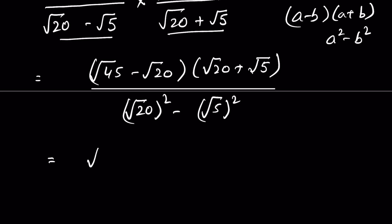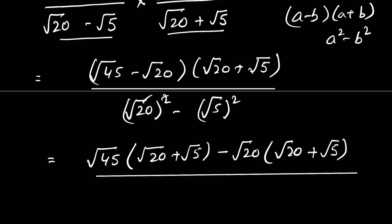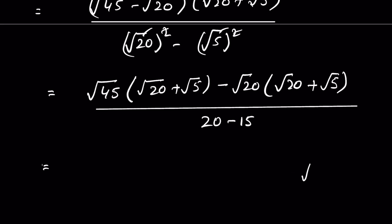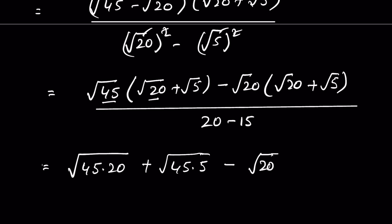For the numerator, we apply the distributive property: square root of 45 times square root of 20 plus square root of 5, then minus square root of 20 times square root of 20 plus square root of 5. The denominator simplifies to 20 minus 5. Using the rule that square root of a times square root of b equals square root of a times b, we get: square root of 45 times 20, plus square root of 45 times 5, minus square root of 20 times 20, minus square root of 20 times 5.